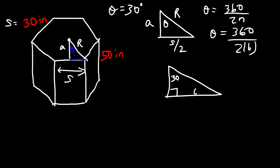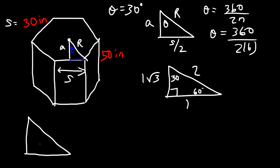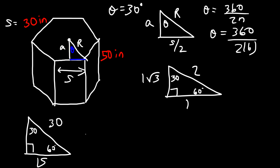Now that we know this is a 30-60-90 triangle, let's review: if the hypotenuse is 2, the side across the 30° angle is half the hypotenuse, so that side is 1. The side across the 60° angle is that number times square root 3. In this example, S is 30, so S divided by 2 is 15. The hypotenuse is twice that, which is 30. The apothem, across the 60° angle, is 15 times square root 3. That's how we calculate the apothem from the side length.